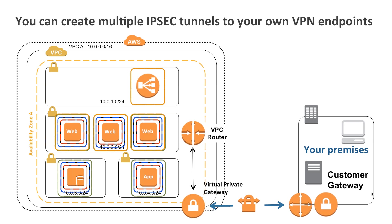Within every region, we always have at least two high availability VPN endpoints at Amazon, which means that you can create two high availability VPN tunnels back to your own infrastructure. This gives you lots of resilience as you start to connect your infrastructure to Amazon's and build your own hybrid solutions.